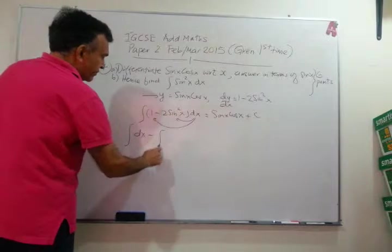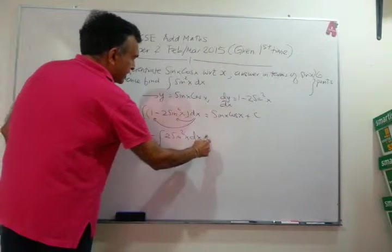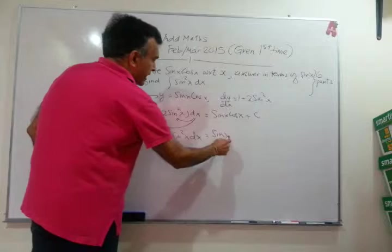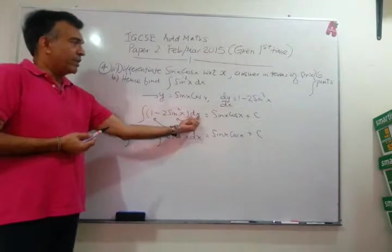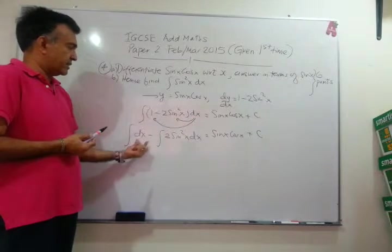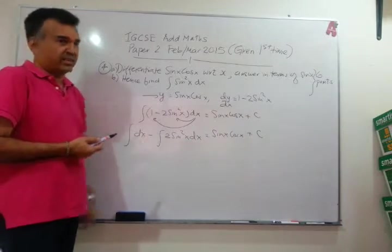The integral of 1 dx minus the integral of 2 sine squared x dx equals sin x cos x plus x plus c. We are bringing the dx inside. dx times 1 is dx. dx times 2 sine squared x is 2 sine squared x dx.